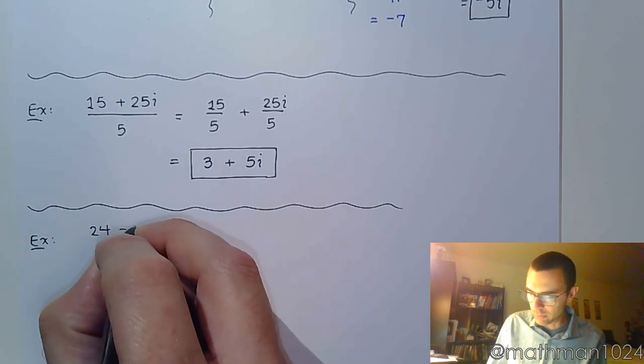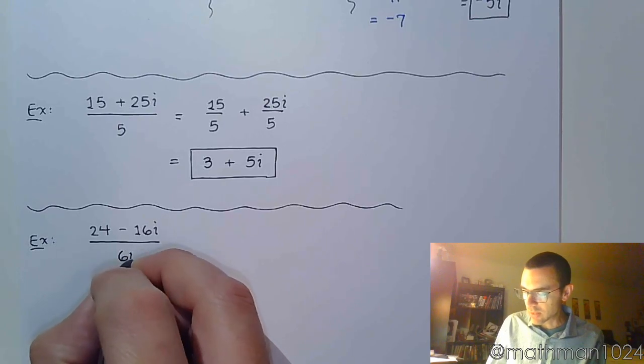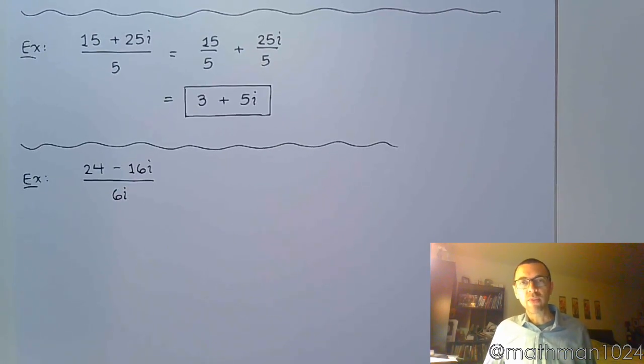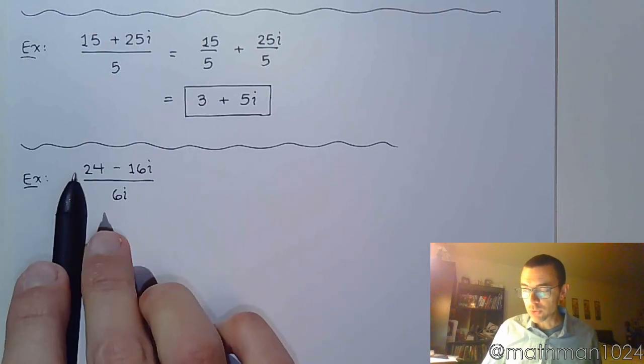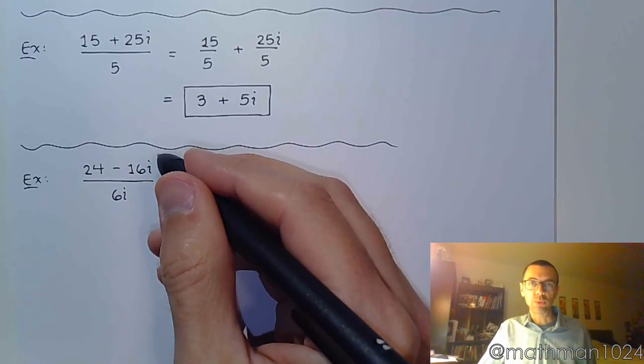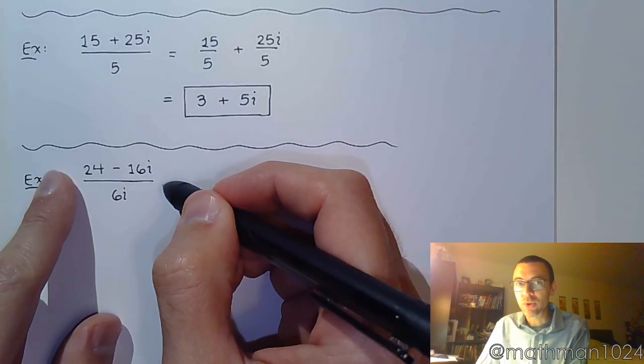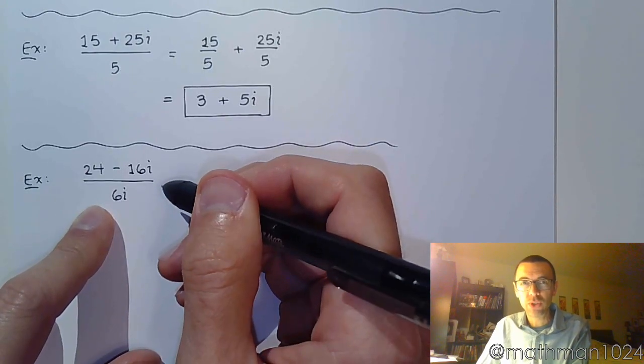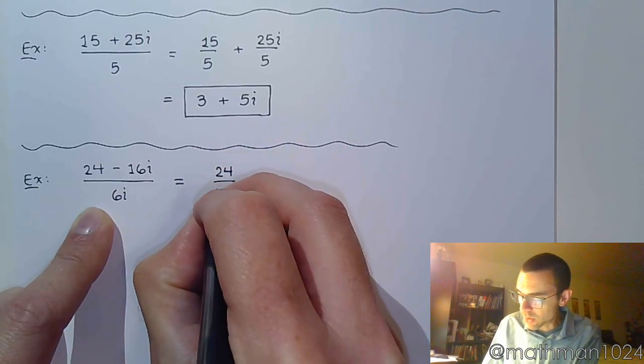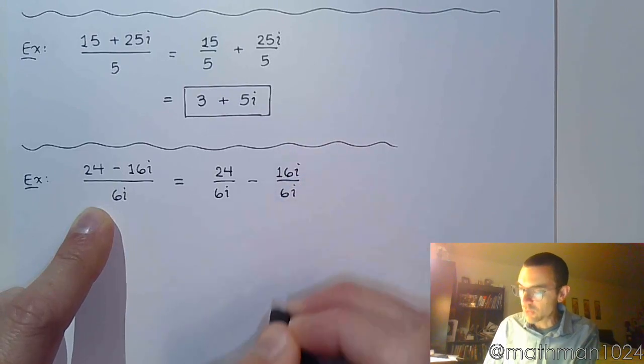Let's do 24 minus 16i divided by 6i. Now, before you go and you do something that's inappropriate, please make sure you understand that that denominator of 6i is the denominator for both 24 and 16i. So, if you get this crazy idea to reduce the i's away, you're going to be in trouble. Because it just doesn't work that way. You cross that out, then all of a sudden it's not 24 divided by 6i anymore. You've changed its denominator. So, to avoid issues like that, separate like we did in the last problem.